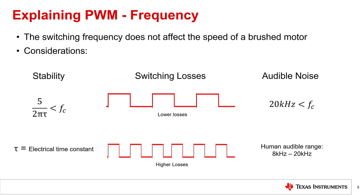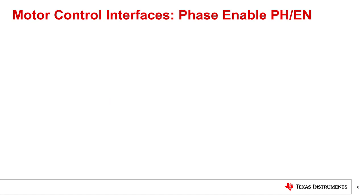Finally, if audible noise is a concern, it would be a good idea to stay above the audible human range, with the limit for most at 20 kilohertz. No matter which interface is used, understanding the concept of pulse-width modulation is essential to successfully driving a brushed DC motor, as all three will employ PWM signals to drive their loads.